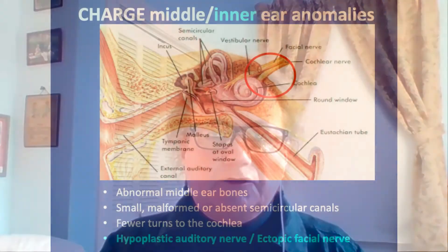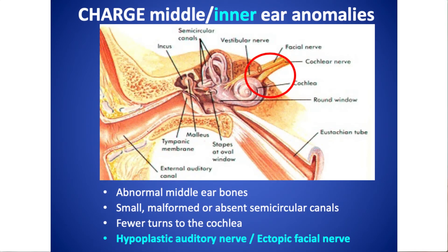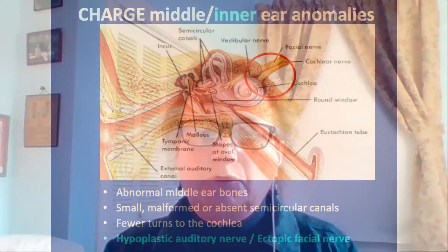In the red circle, you can see the cochlear nerve, and sitting right on top of it is the facial nerve. That facial nerve goes through the inner ear. If someone is being evaluated for a cochlear implant, it's really important to know where the facial nerve is, because it sometimes goes in an odd place in kids with CHARGE. You don't want to damage that in the process of putting in a cochlear implant.